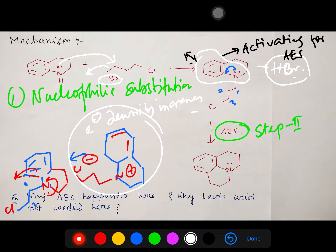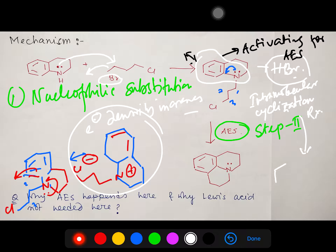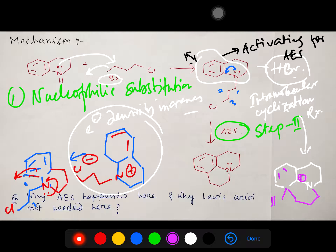Electron density in the ring is increased, so it is activated towards AES, and it undergoes an intramolecular cyclization reaction to produce an intermediate — better called the sigma complex. The sigma complex has the positive charge on the ring. It is a six-membered ring: three carbons from the chain, plus positions one, two, three to the ortho position. The positive charge is resonance-stabilized by the nitrogen lone pair.